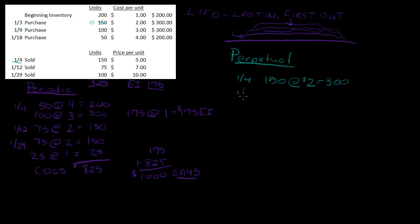Now let's do 1-12. For 1-12, I need 75 units. Where am I going to take them from? On 1-12, this purchase had come in a couple days before. So doing LIFO and taking the last units on hand on that date, they're going to come from 1-9. I need 75 units at $3 each, which is $225. I took 75 from there, leaving 25 left.